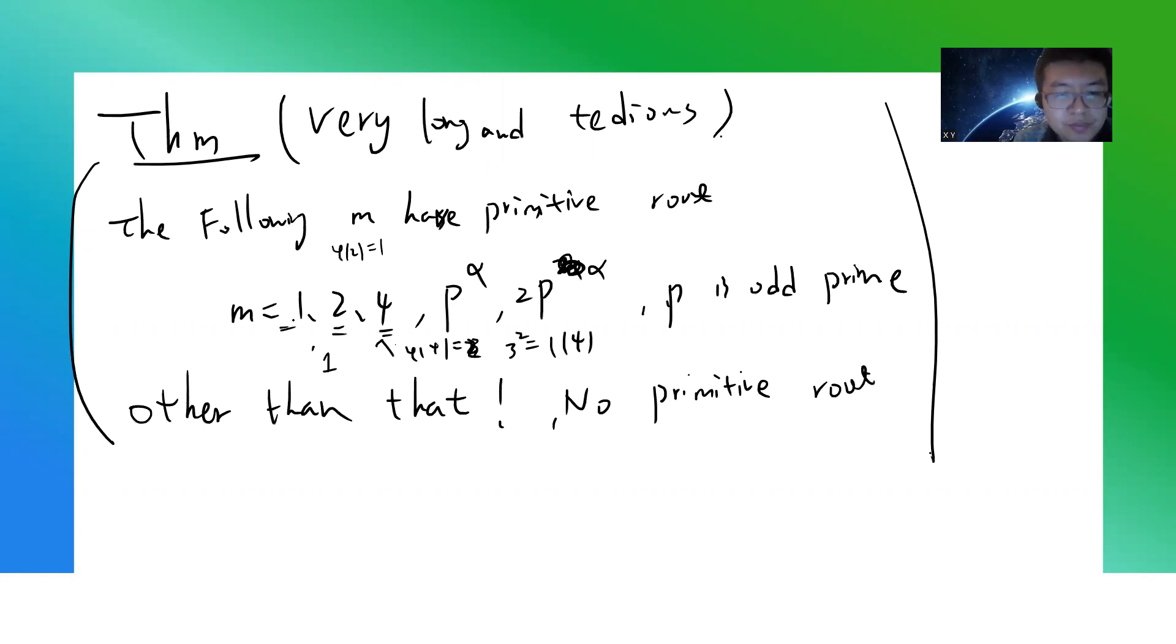So in the previous video I showed that m = 1, 2, 4, p^α, 2p^α, these are the only primitive roots. And other than that, there's no primitive roots.